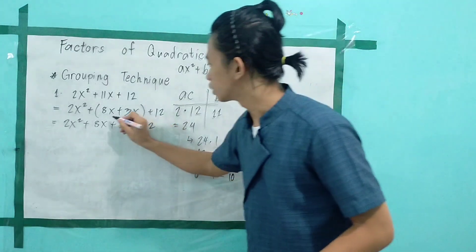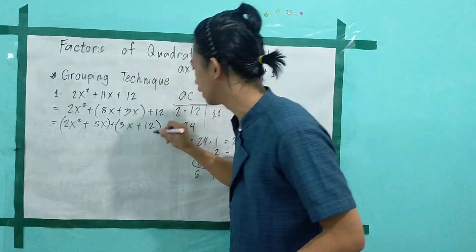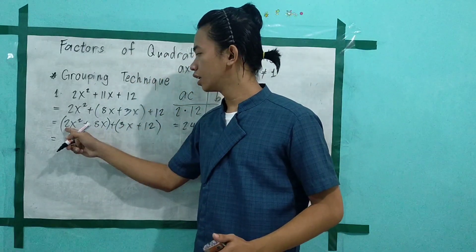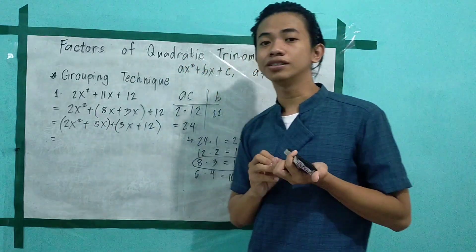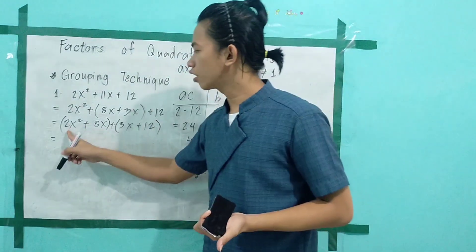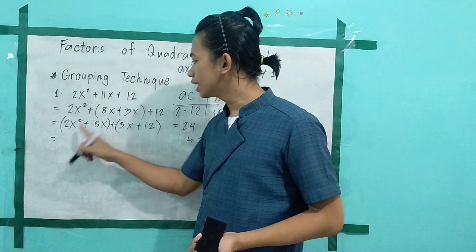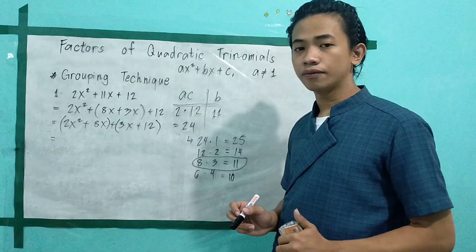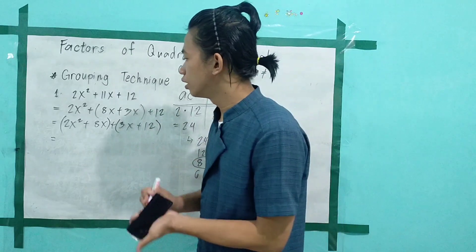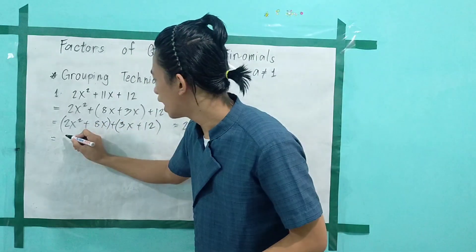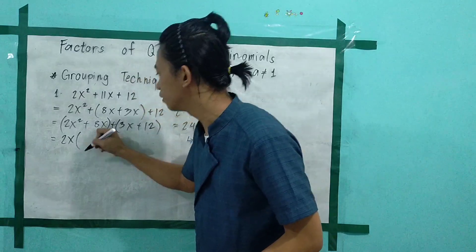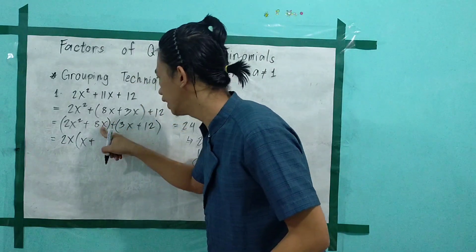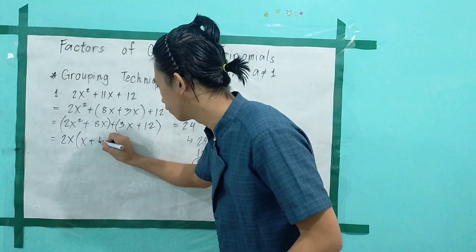Apply the grouping technique. Create binomials: (2x squared plus 8x) plus (3x plus 12). Inside the first parenthesis, there is a common monomial factor. The GCF of 2x squared plus 8x is 2x. Dividing: 2x squared divided by 2x is x, and 8x divided by 2x is 4.